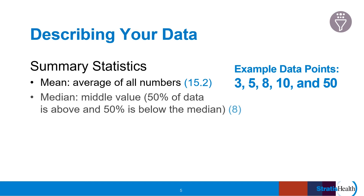The median is the middle value — 50% of data is above and 50% of data is below the median. Organize your data sequentially, lowest to highest, and then determine which value lies in the middle. In this case, 8 is our median, since 3 and 5 lie below it, and 10 and 50 are above it.